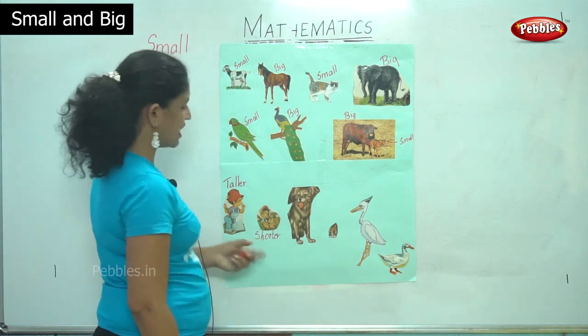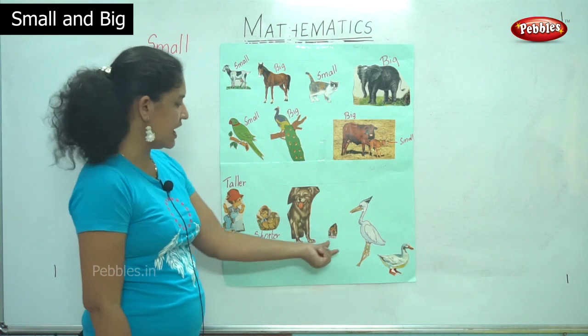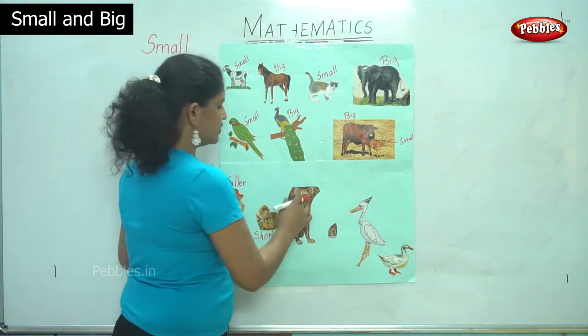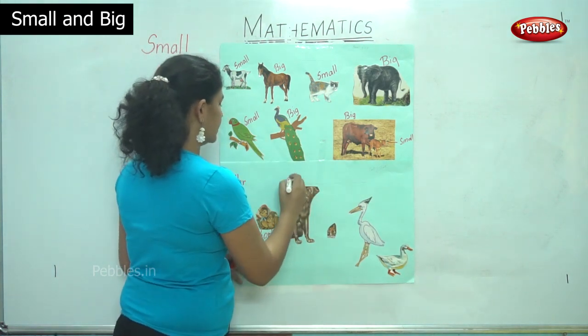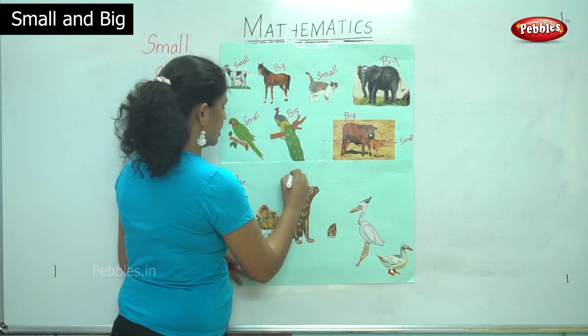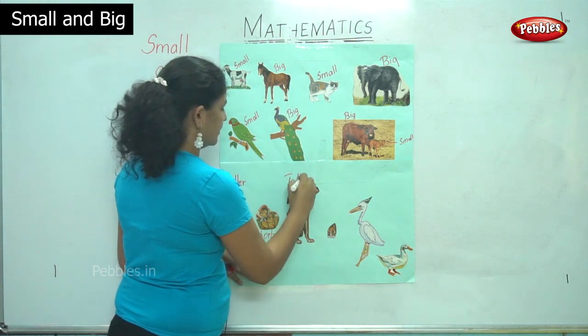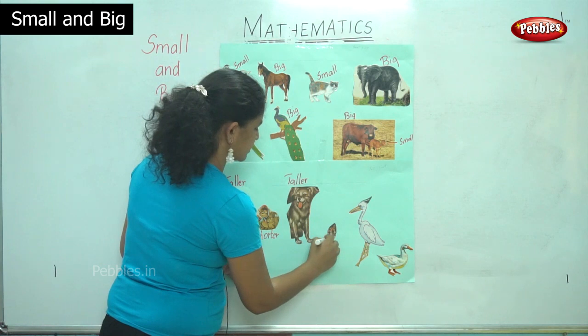Next we have the picture of a huge dog and the picture of a man. The dog is taller when compared to the man, and the man is shorter.